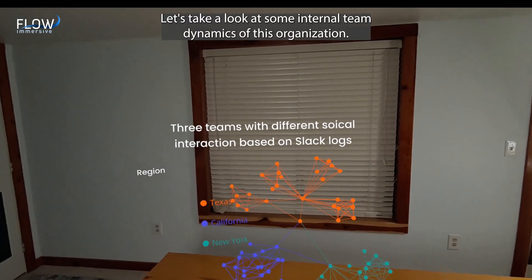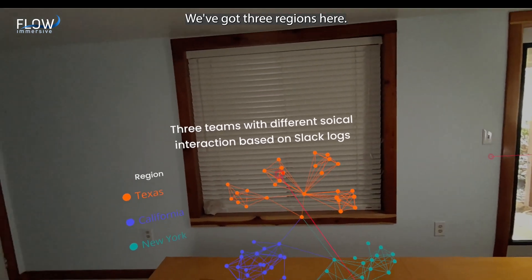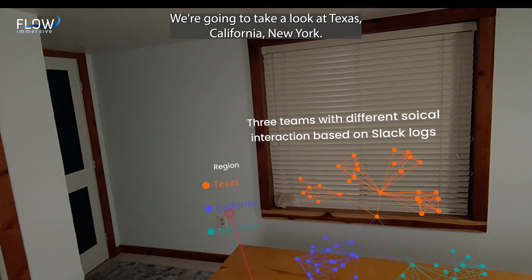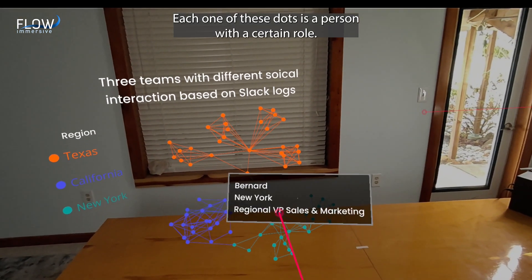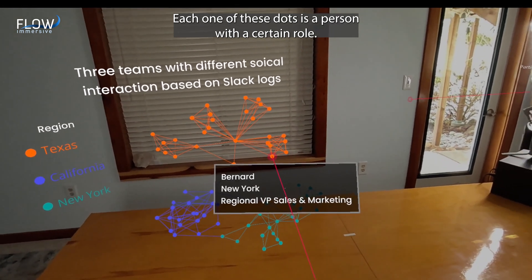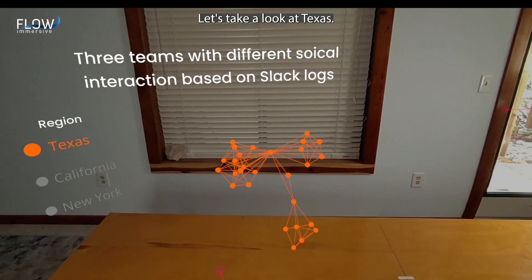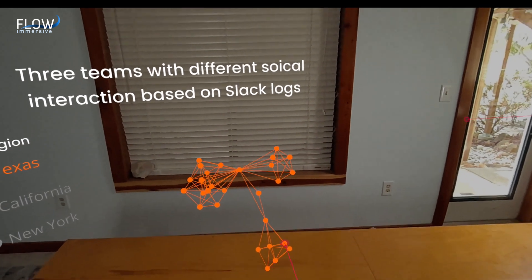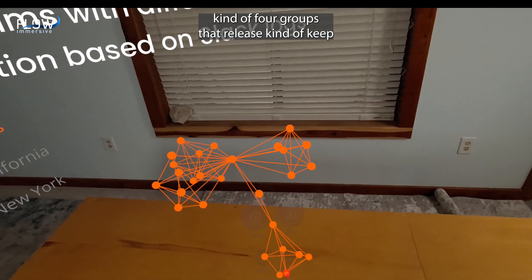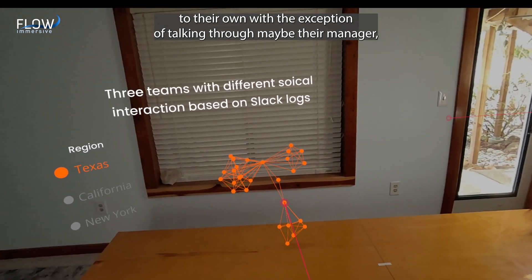Let's take a look at some internal team dynamics of this organization. We've got three regions here. We're going to take a look at Texas, California, New York. Each one of these dots is a person with a certain role. And in this case, the Texas region. Let's take a look at Texas. It looks like there's a few really important nodes, but otherwise kind of four groups that keep to their own with the exception of talking through maybe their manager.